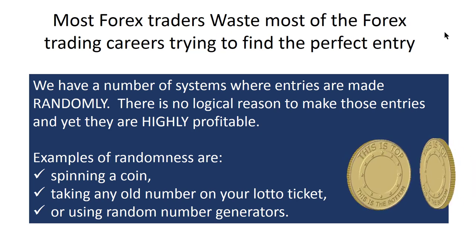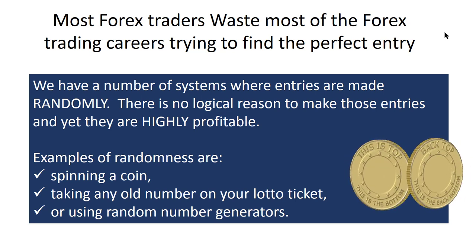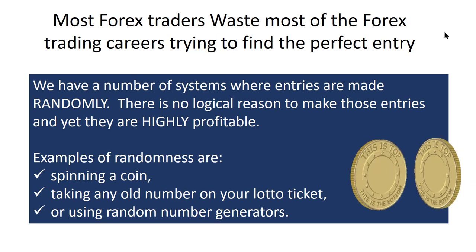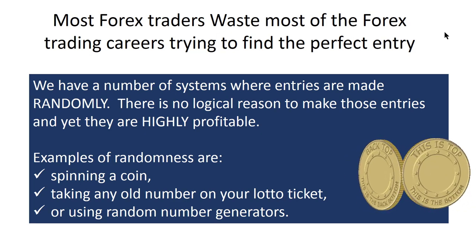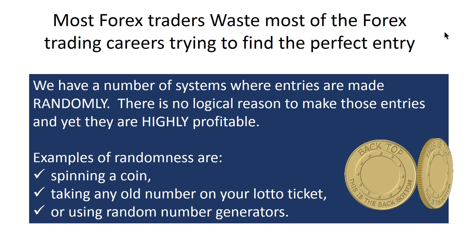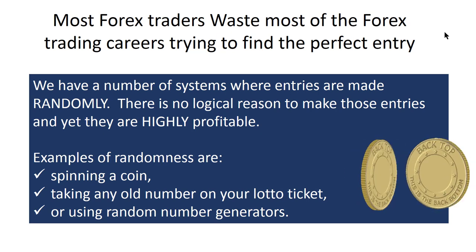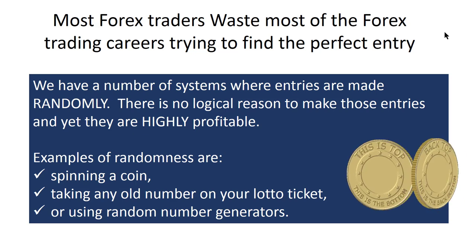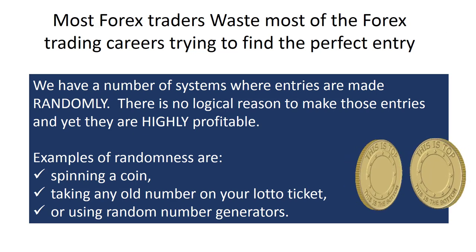Examples of randomness in general are things like flipping a coin, picking any old number when filling in your lottery form, placing crosses wherever you want, or using random number generators — you don't know what the next number is. It's all random, and you can make money out of that trading the Forex market.